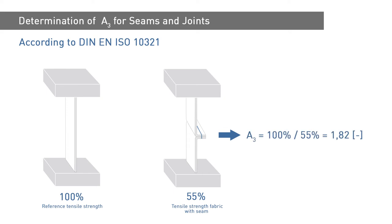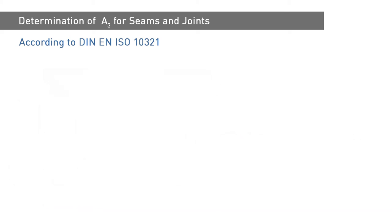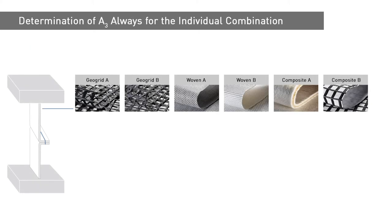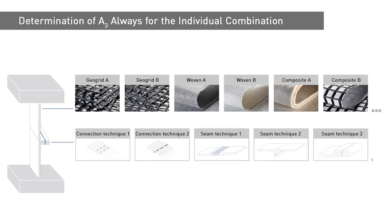The A3 reduction factor is then given as the reciprocal of the joint strength. A3 equals 100% over 55%, equals 1.82. As the transferable tensile strength at a joint or seam heavily depends on the combination of jointed reinforcement product and adopted jointing method, verification of the tensile strength is always required for the particular combination.